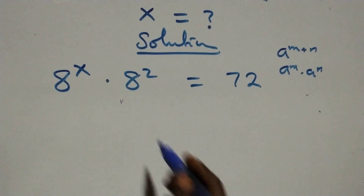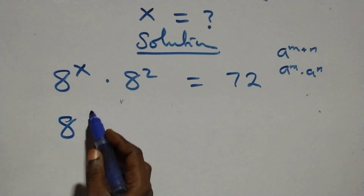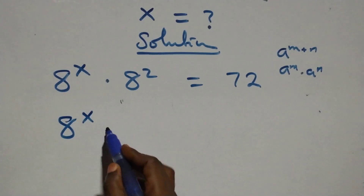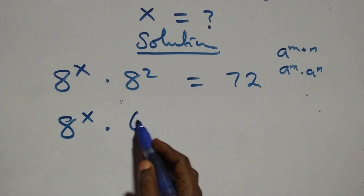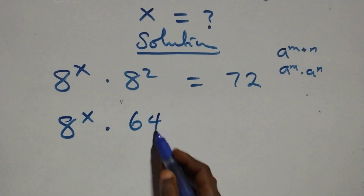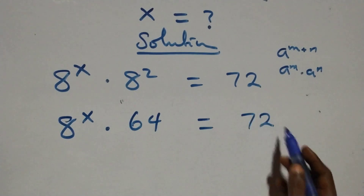Here, this is the same thing as 8 raised to power x, times 8 squared. That is, 8 times 8, which is 64, equals 72.